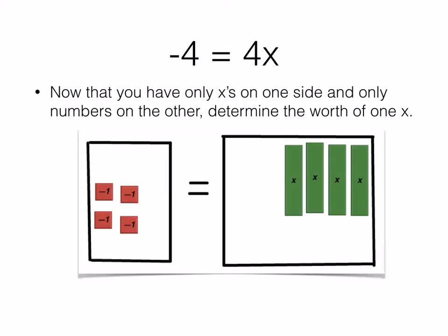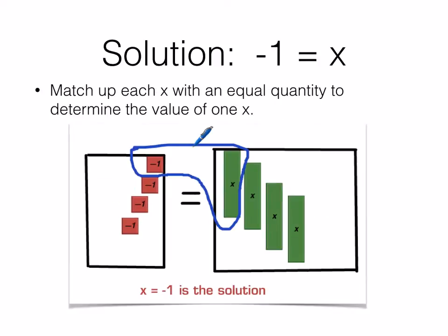Now our job is to figure out the value of one of the x's. So we can just divide and see how many of those counters on the left-hand side equals 1x. Therefore, negative 1 is equal to x. So x equals negative 1 is the solution to the original equation.